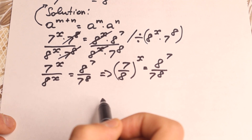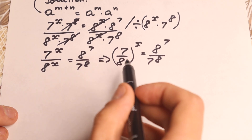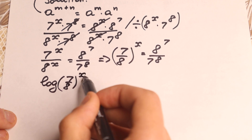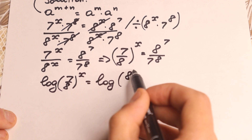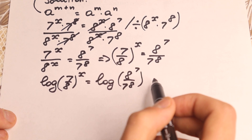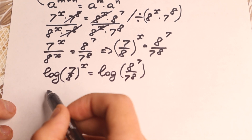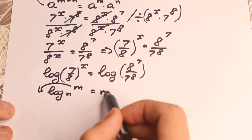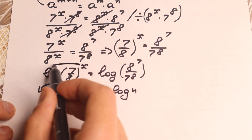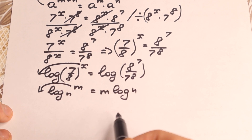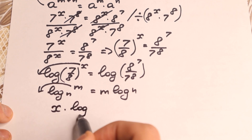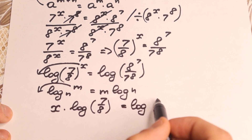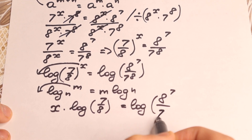We have different bases but the same exponent, so we can write it in this way. Let's take log on both sides. Log of 7 over 8 to the power x equals log of 8 to the 7 over 7 to the 8th. We use the log property that log of m to the power n equals n times log m, so we bring x down to get x times log(7/8) equal to log of 8 to the 7 over 7 to the 8th.